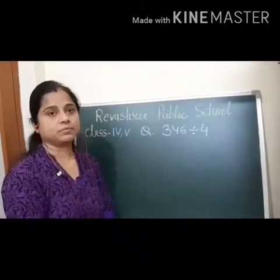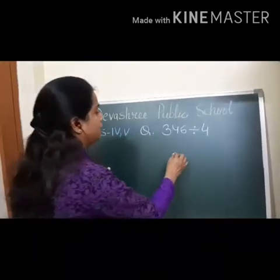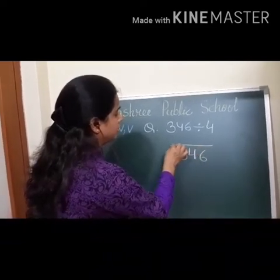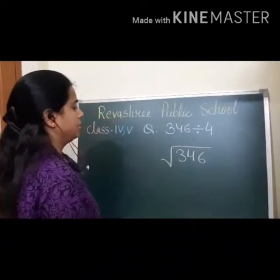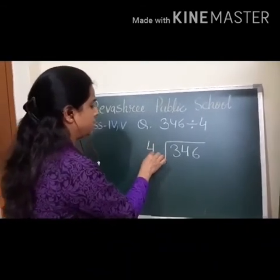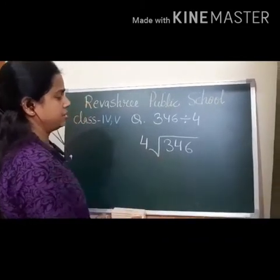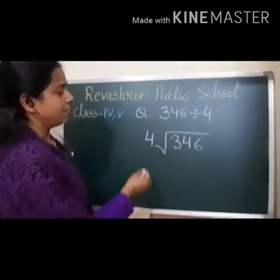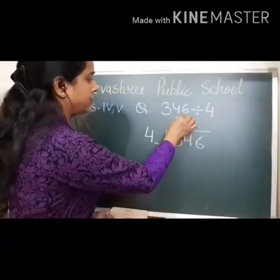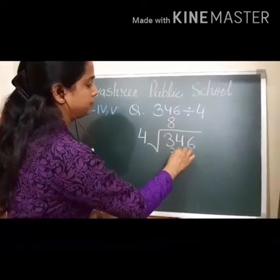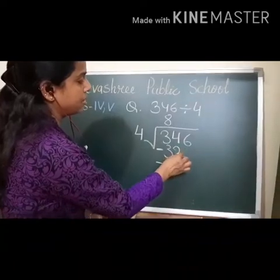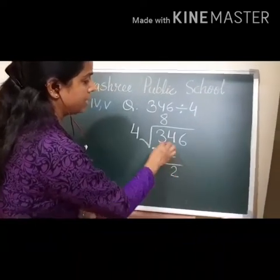346 divided by 4. So, 346 — we are putting the division sign here. The divisor is coming here. Now I will start dividing this. Here we are doing minus. So, 4 minus 2 is 10. 3 minus 3 is 0.